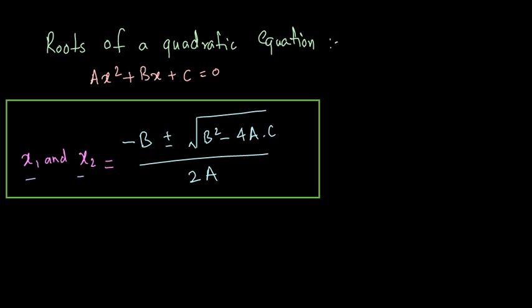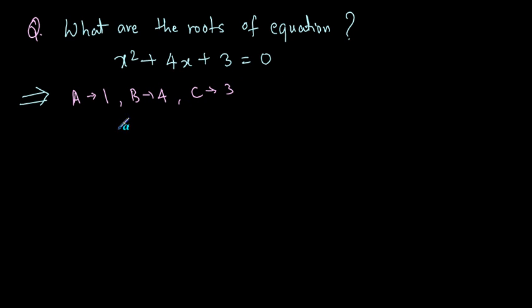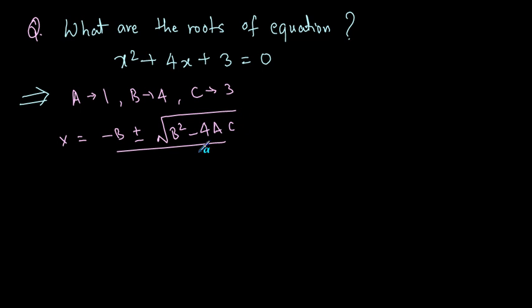Let's solve an example using this formula. The question is: x squared plus 4x plus 3 is equal to 0 — what are the roots of this equation? First, identify a, b and c: a is 1, b is 4 and c is 3. The formula is x equals minus b plus or minus the square root of b squared minus 4ac, all divided by 2a.